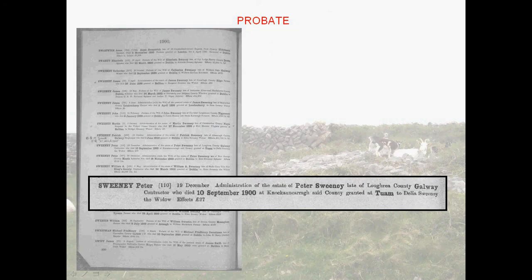Probate files can be found if the person left a will. This Peter Sweeney died in September of 1900. Notice on the top line at the far right it says 'late of County Loughrea,' meaning that's where he was living, but he didn't die there — he died in another location. So I have a specific death date and location, and the record also mentions his wife as well as how much his estate was worth.